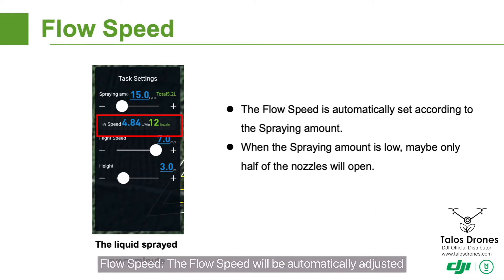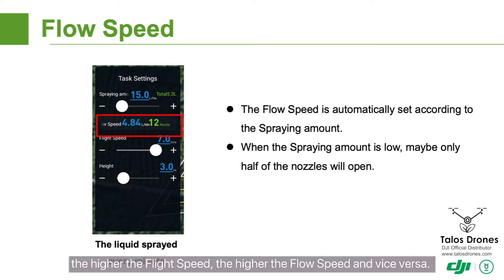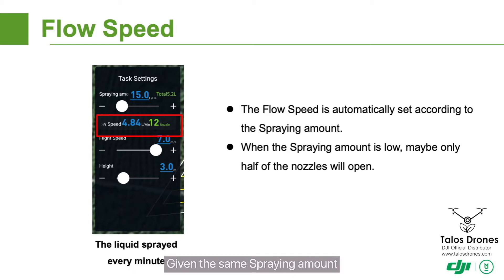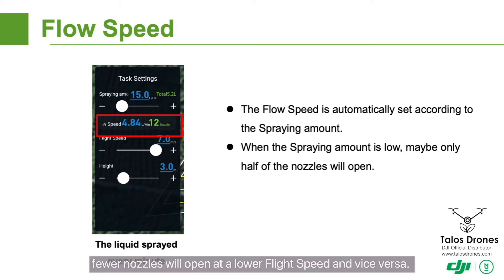Flow speed. The flow speed will be automatically adjusted based on the set flight speed after the spraying amount is set. Normally, the higher the flight speed, the higher the flow speed, and vice versa. The number of open nozzles is determined based on the flow speed. Given the same spraying amount, fewer nozzles will open at a lower flight speed and vice versa.